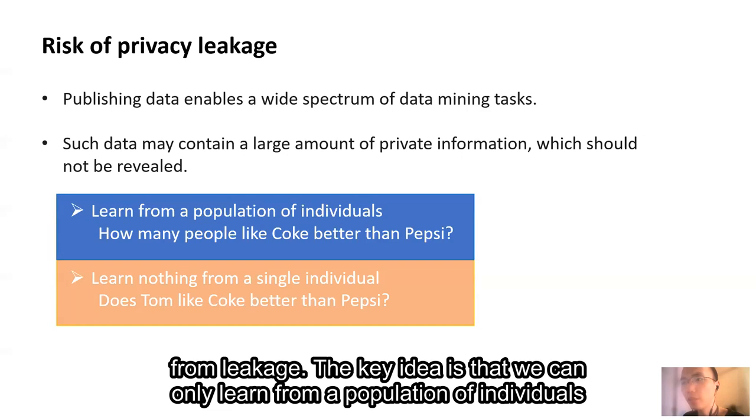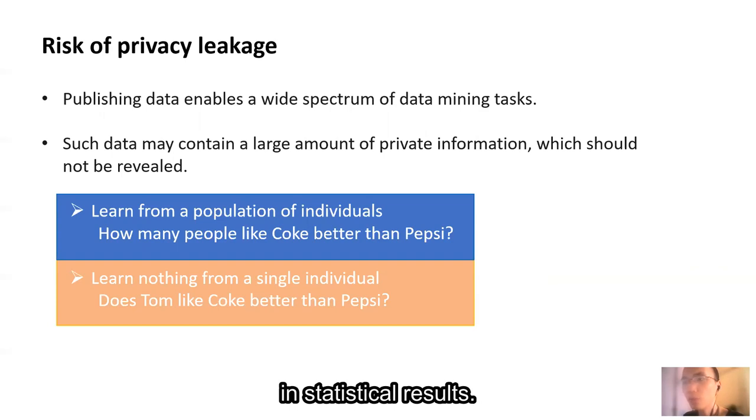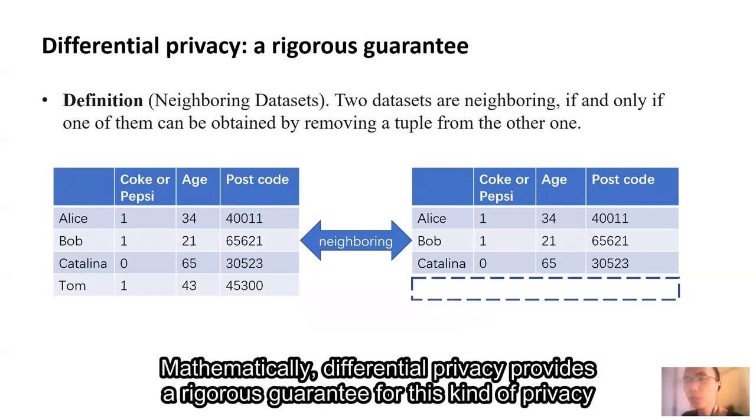The key idea is that we can only learn from a population of individuals, and we should learn nothing from a single individual. That is, we are only interested in statistical results. Mathematically, differential privacy provides a rigorous guarantee for this kind of privacy protection.